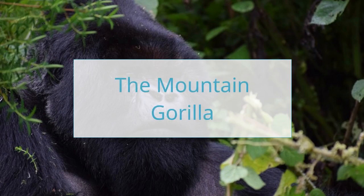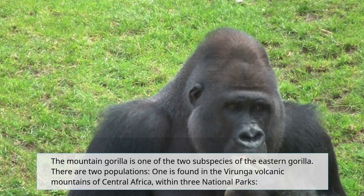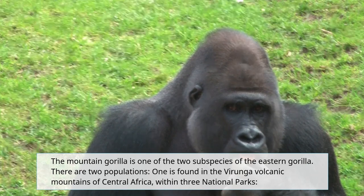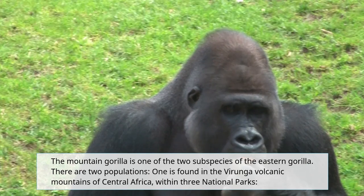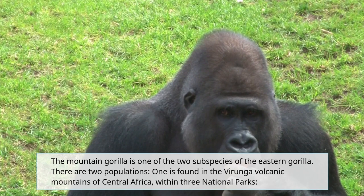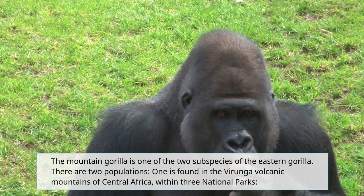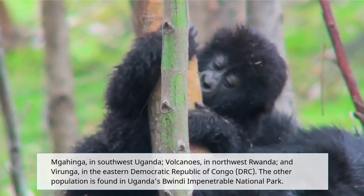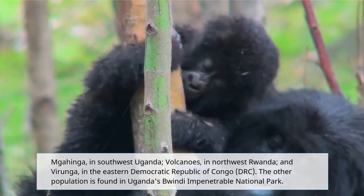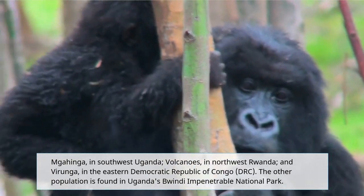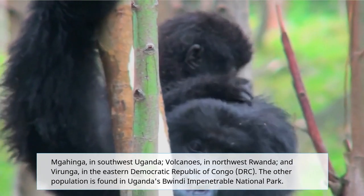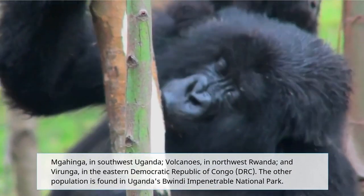The Mountain Gorilla is one of the two subspecies of the Eastern Gorilla. There are two populations. One is found in the Virunga Volcanic Mountains of Central Africa, within three national parks: Mgahinga, in southwest Uganda; Volcanoes, in northwest Rwanda; and Virunga, in the Eastern Democratic Republic of Congo.